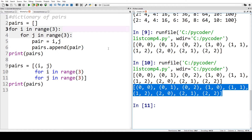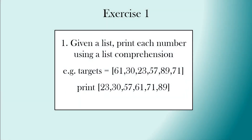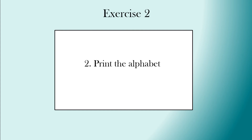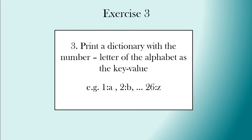We can still use list comprehensions even though our for loops start to get a bit more complex. Now let's look at the practice exercises. Exercise one: given a list, print each number using a list comprehension. Here's an example list and this is what it will look like when you print it. Exercise two: print the alphabet. Exercise three: print a dictionary with the number and the letter of the alphabet as a key and a value, so you'll end up with 1:a through to 26:z in the dictionary.